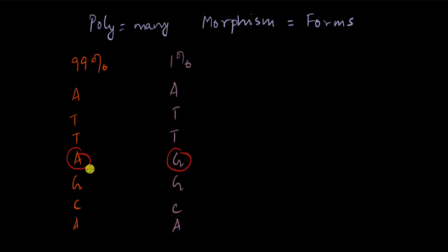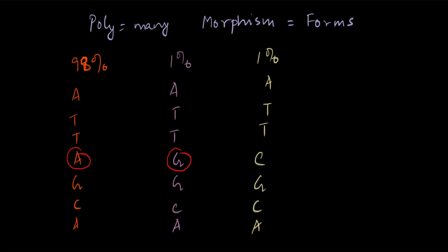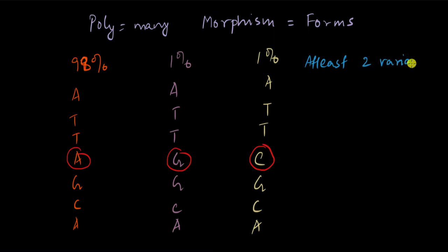It's not necessary that there be only two types of variations. In this case I've shown two sequences — one has 'A' at this position and the other has 'G' — but there can be more variants. For a variation to qualify as a polymorphism, there must be at least two variants, and secondly, each variant should be present in at least one percent of the population.